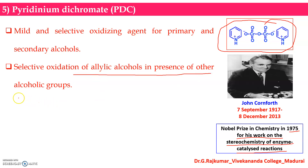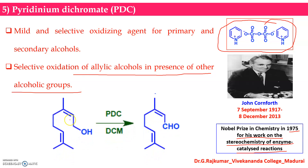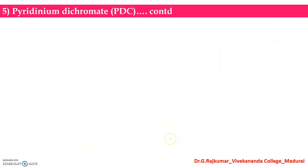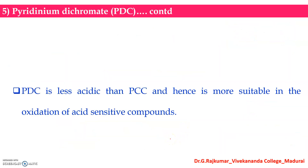PDC can be used for selective oxidation of primary and secondary alcohols, especially for selective oxidation of allylic alcohols in the presence of other hydroxyl groups. A primary hydroxyl group in the presence of PDC and DCM can be oxidized into an aldehyde.